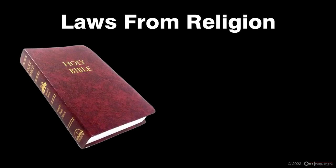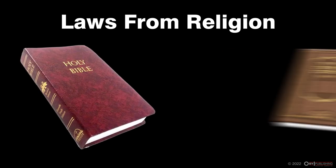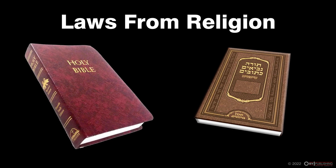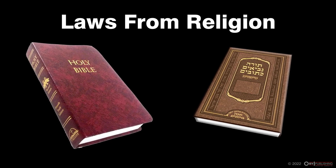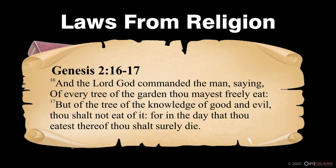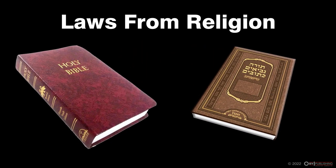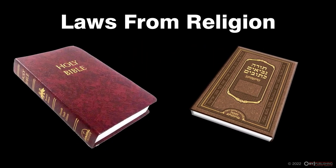From the religion side, the Christian Bible and the Hebrew Torah offered that the very first existential law simultaneously emerged with the creation of the Garden of Eden in Genesis 2:16-17: "And the Lord God commanded the man, saying, Of every tree in the garden thou mayest freely eat. But of the tree of the knowledge of good and evil, thou shalt not eat of it. For in the day that thou eatest thereof thou shalt surely die." So apparently, even in a veritable paradise, there are rules that must be followed.